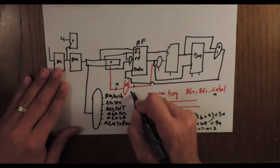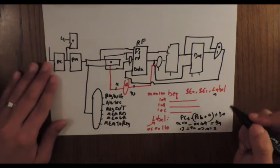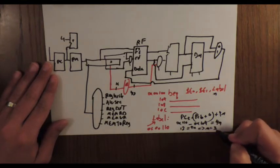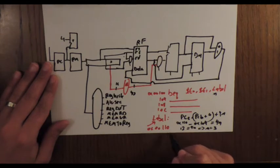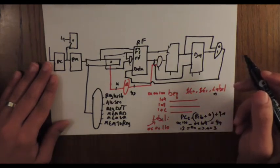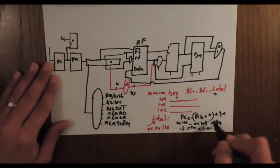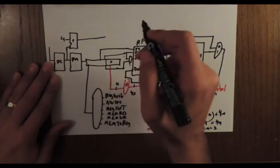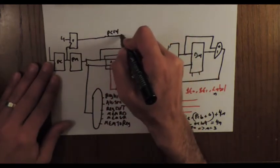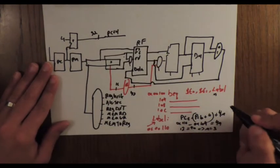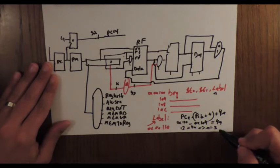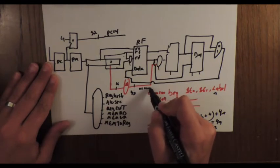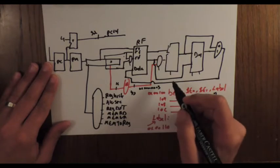What we need to do for this modification is manipulate PC in order to recreate the address 0x110. First, I need to get PC plus 4 and add to it 4n. PC plus 4 is a 32-bit number, and now I need to add 4 times n. We already know that n equals 3 in our example, so this is sign-extended to 32 bits.